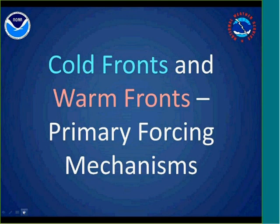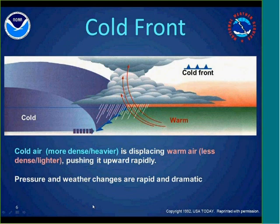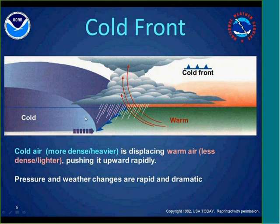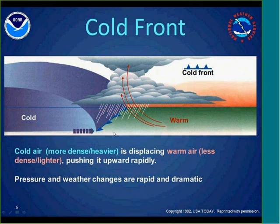Let's talk about the forcing mechanisms — warm fronts and cold fronts. In a cold front, it's cold air trying to displace warm air. Cold air being more dense or heavier is fairly efficient at moving warm air out of the way because warm air is lighter and less dense. If you look at the shape of a cold front being fairly steep in the vertical, as the front moves into the warmer air, that warmer air gets lifted fairly rapidly. The stronger and faster-moving the front, in many cases the stronger the vertical motion and the better chance you have for thunderstorms. With cold fronts, both the weather changes and the pressure changes can be fairly rapid and dramatic.